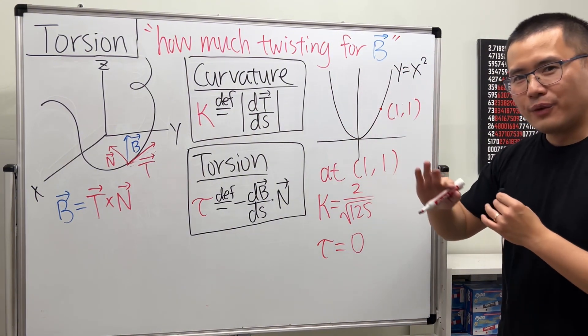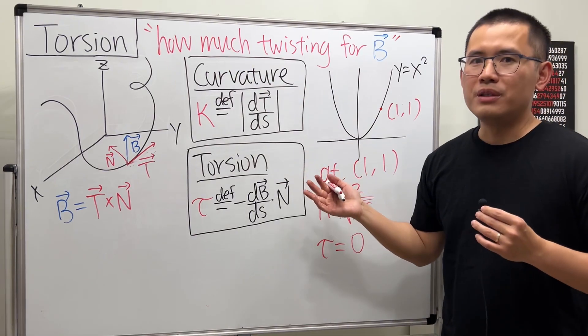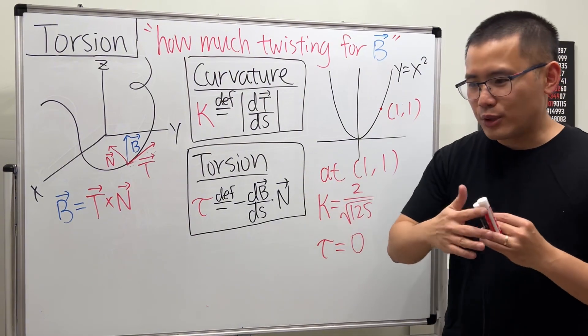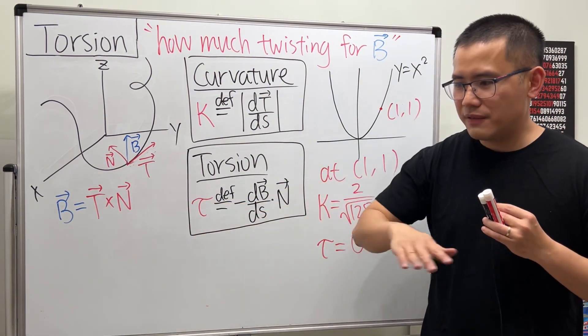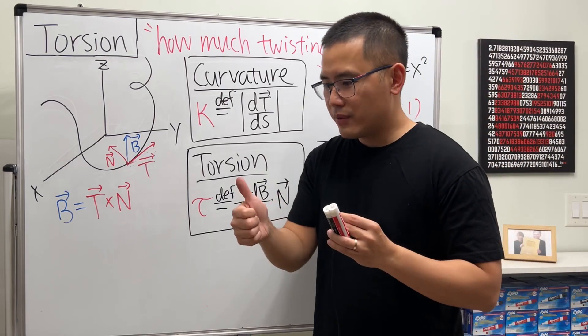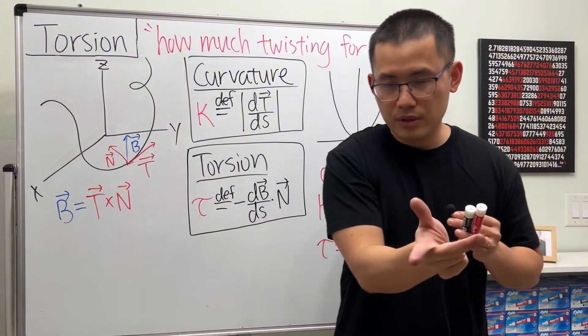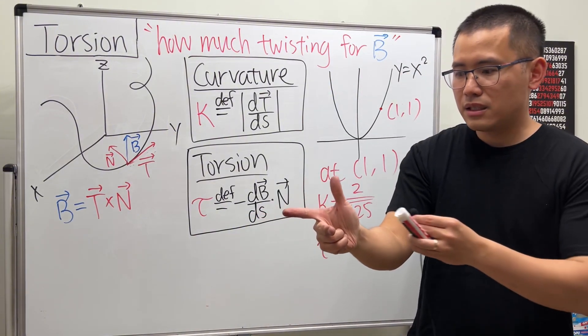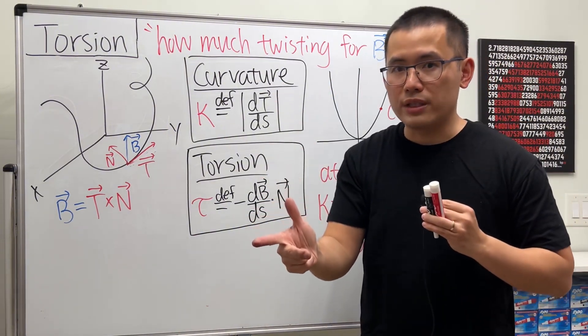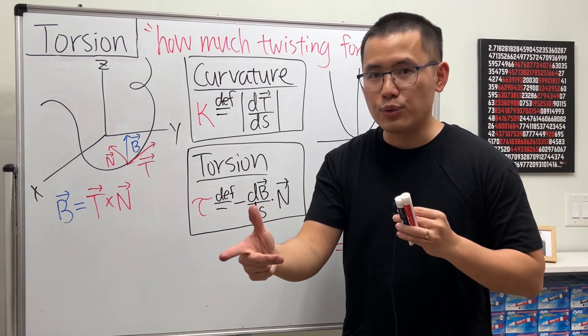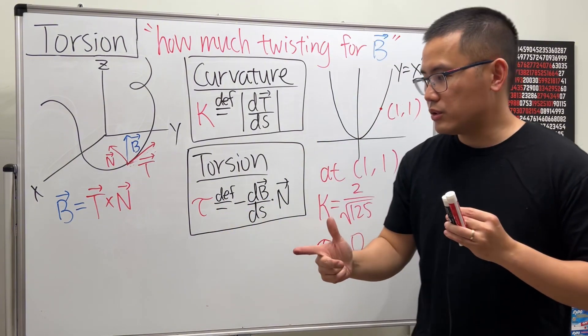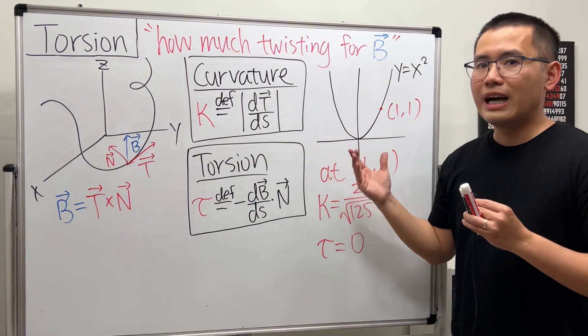So in fact, right here, τ is going to be zero. In fact, for any plane curve, the torsion is just going to be zero. Just imagine that you're driving on a flat surface, flat road. You're driving. No matter how you turn, you have different curvature, but you are always going to sit up straight. You are not going to be twisting around. So the torsion is always going to be zero when we have a plane curve.